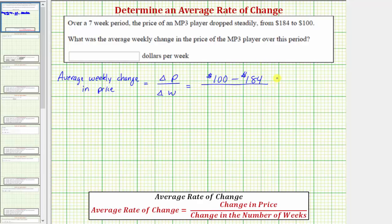We want to divide this difference by the change in the number of weeks, and because we're told this is over a seven week period, delta w is seven weeks.